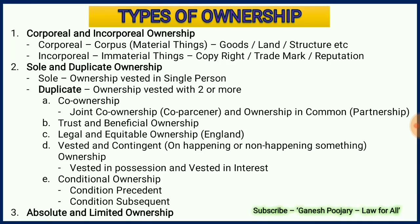The second type is sole and duplicate ownership. If ownership is vested in a single person that is known as sole ownership, whereas when the ownership is vested with two or more people that is known as duplicate ownership. Under duplicate ownership we again have five subcategories. The first one being co-ownership, which has two concepts: joint co-ownership and ownership in common. In joint co-ownership, if A and B are co-parceners with 50-50% share and B dies, the entire property goes to A. Whereas in ownership in common, if B dies the ownership goes to B's legal heirs.